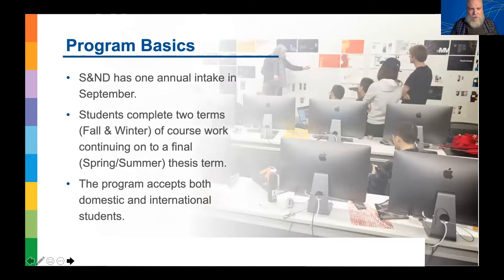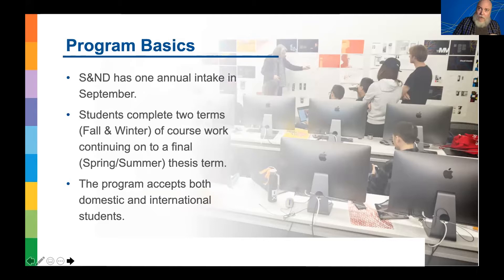Basics of the program: we have one intake per year, and that is in September. The program is organized over three terms — fall, winter, and spring/summer — so you're working from September through to August of the following year. Fall and winter are primarily directed toward coursework: paired courses in writing for television, writing for film, writing for interactive media and video game, business courses, more overarching entertainment writing courses, and our studio and intensive courses.